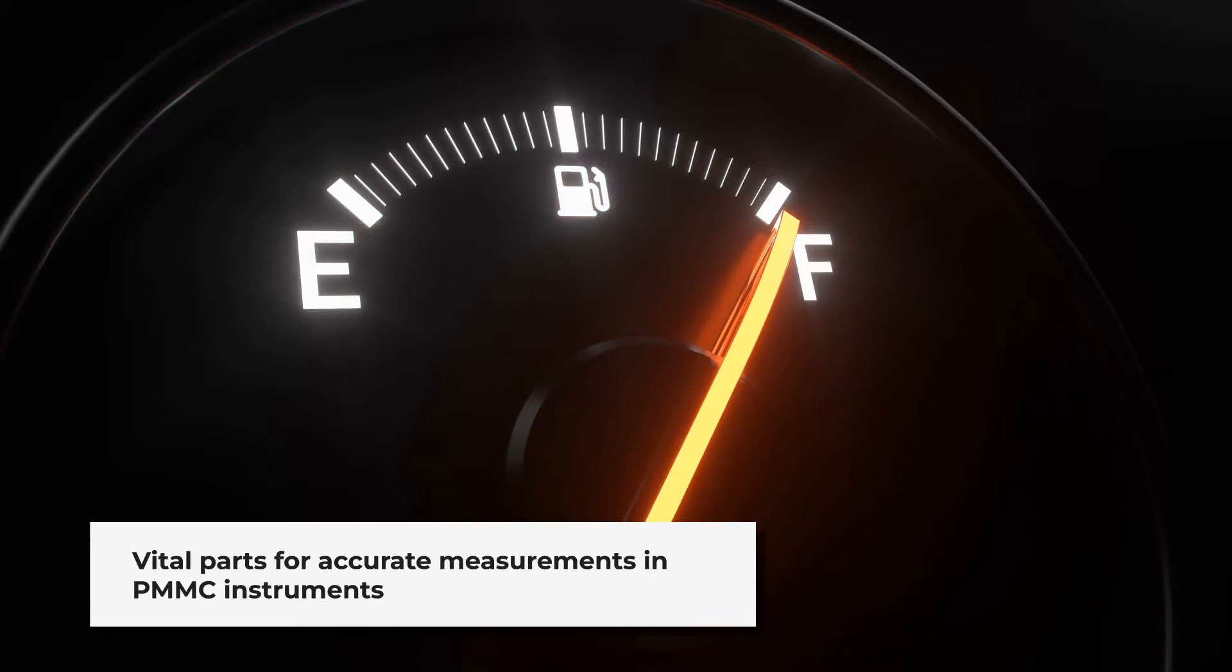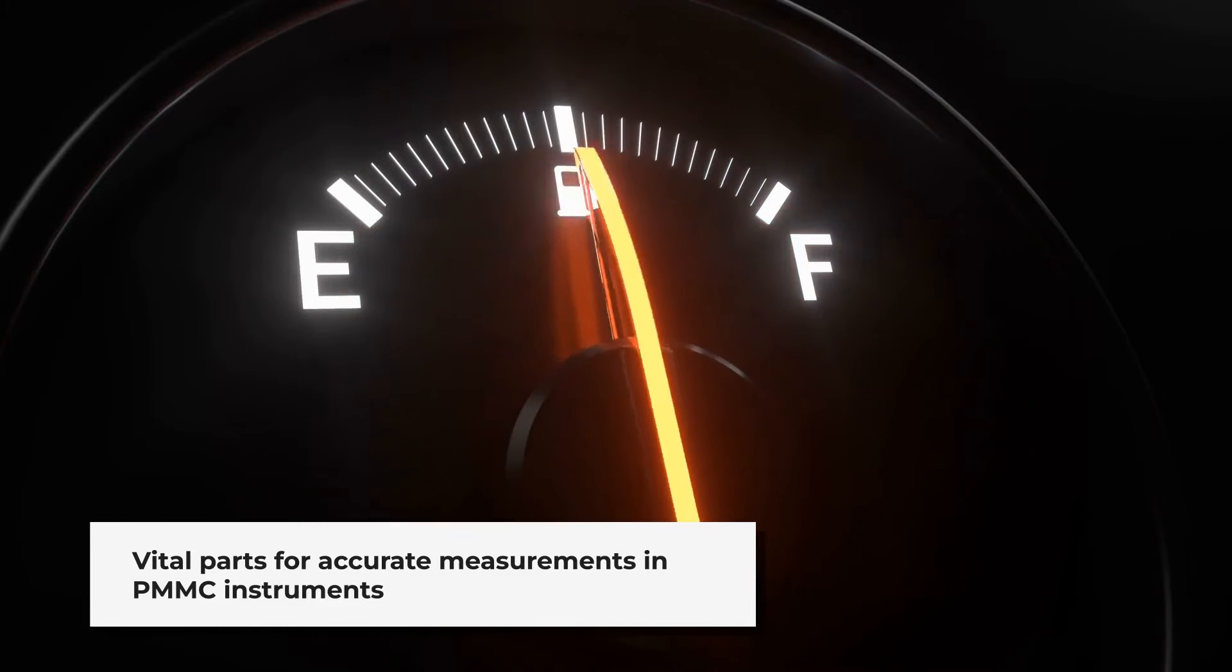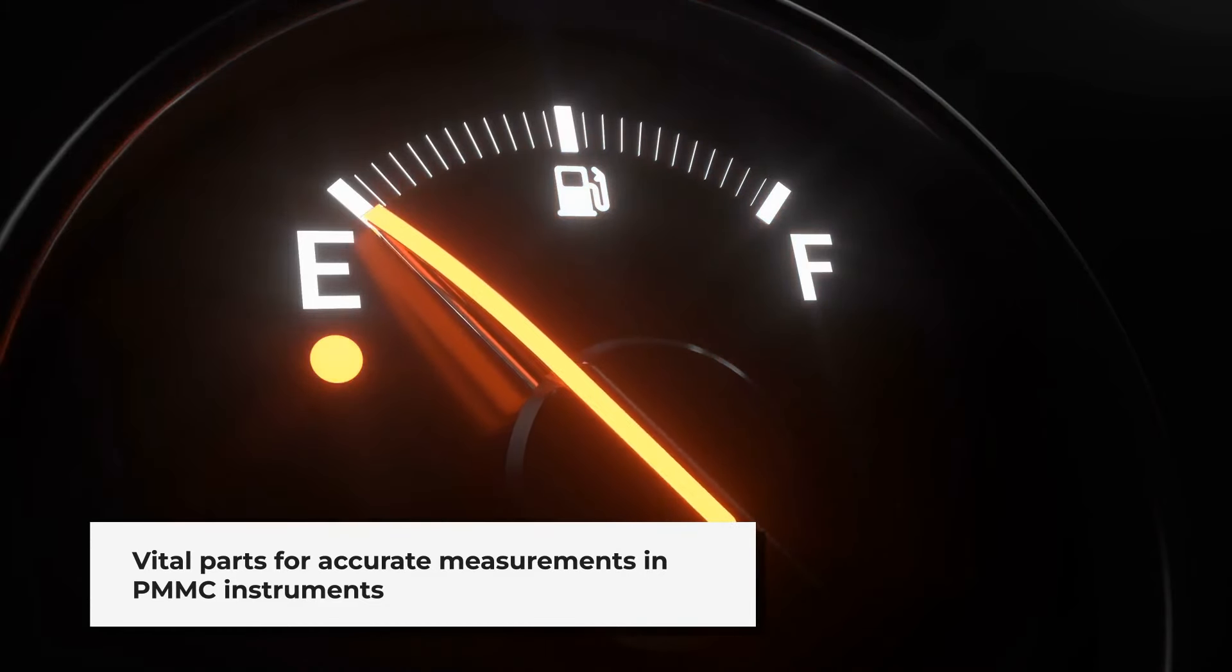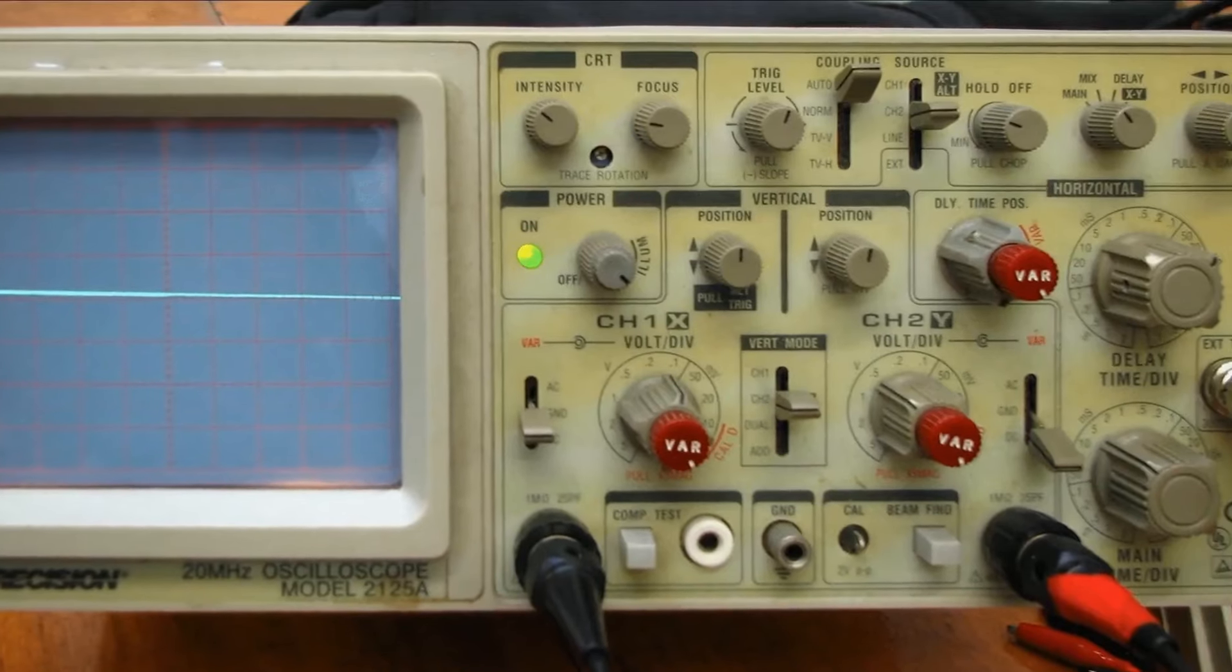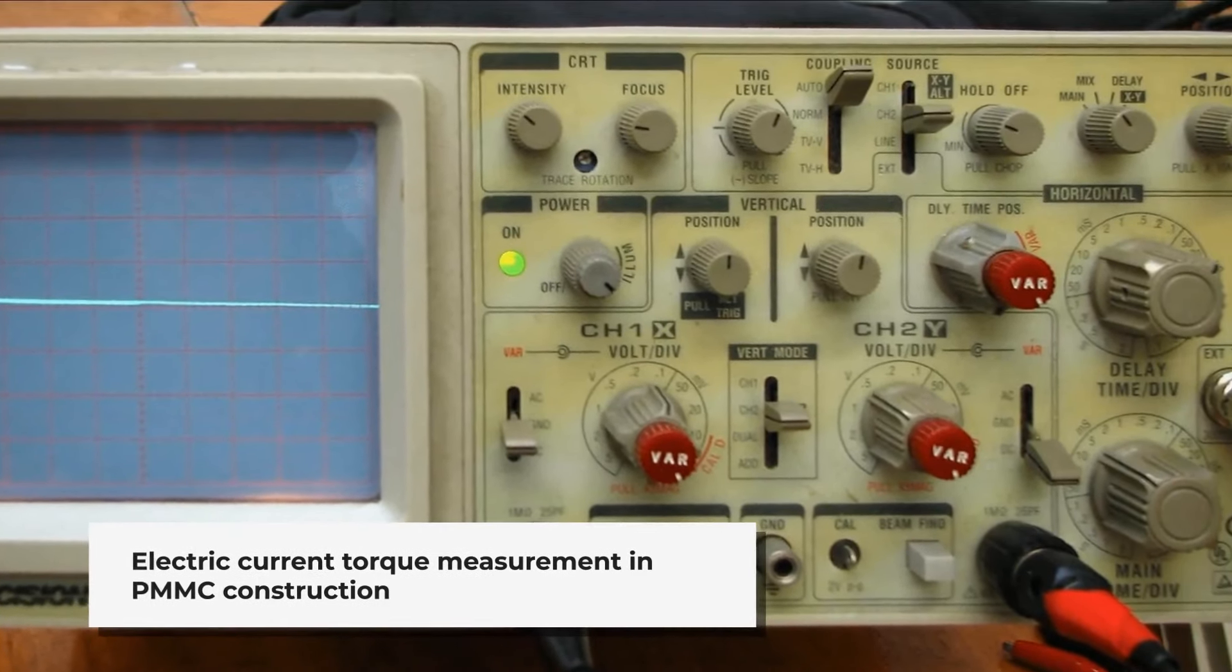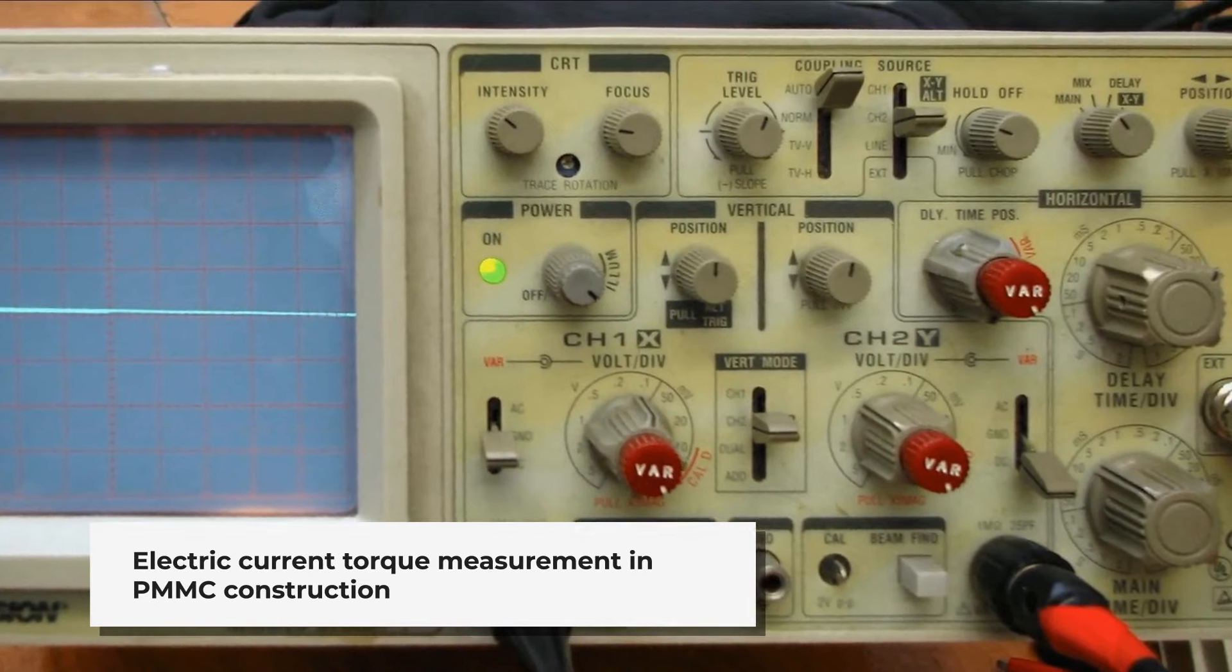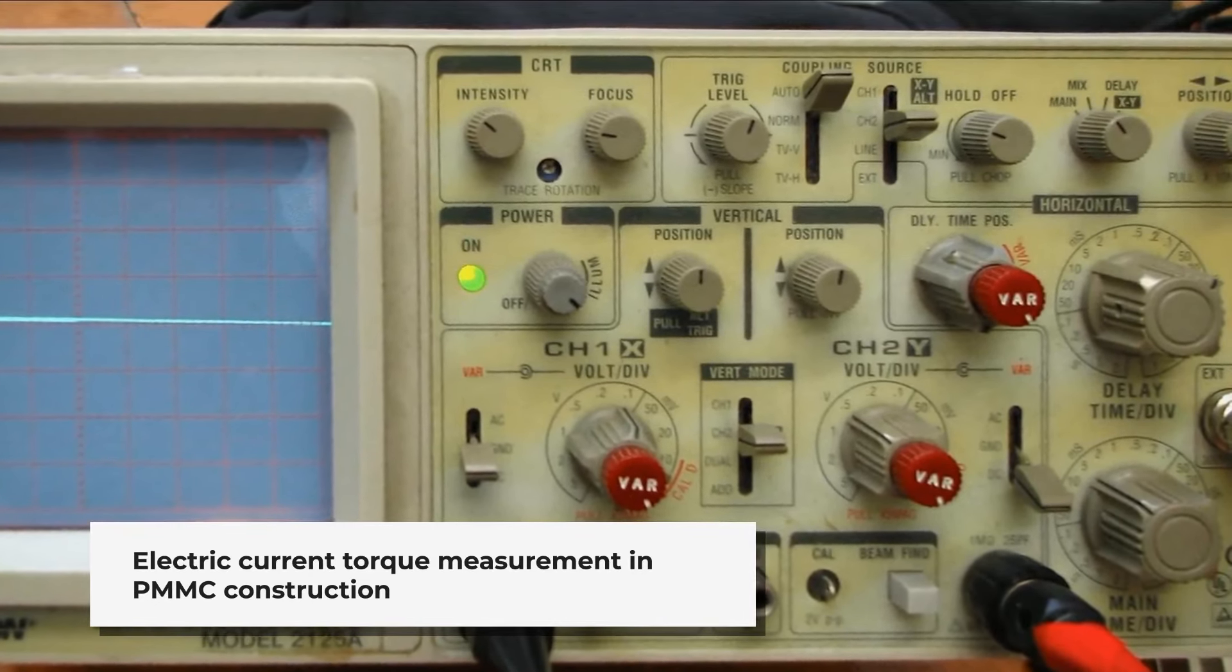The moving coil, situated between the poles of permanent magnets, is where the magic happens. As electric current flows through the coil, it generates a torque, causing the coil to move. This movement is meticulously measured and displayed.